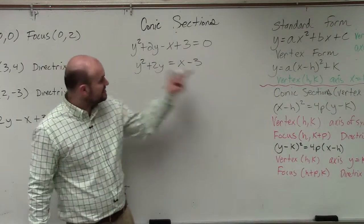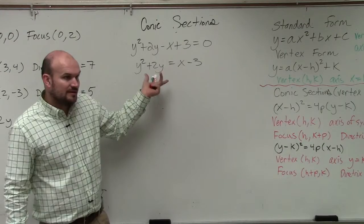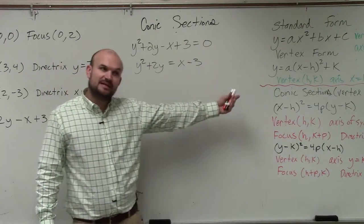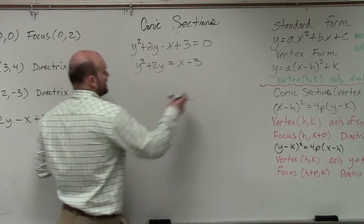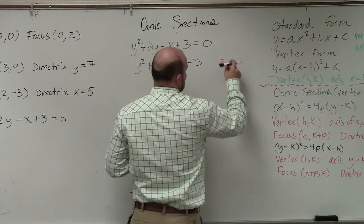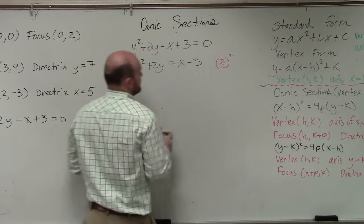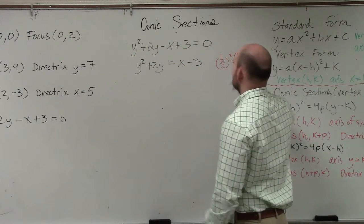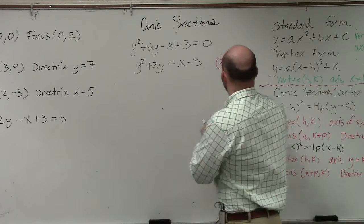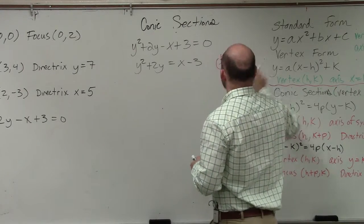Now, the main important thing if you guys look at this, this needs to be a binomial squared. So if you guys remember, we talked about this at the beginning of the year. We need to complete the square, meaning we need to take b divided by 2 and square it. So therefore, I have 2 divided by 2 and then squared, which equals 1.